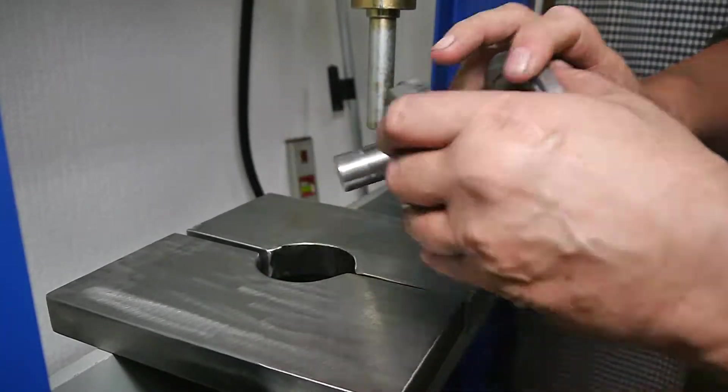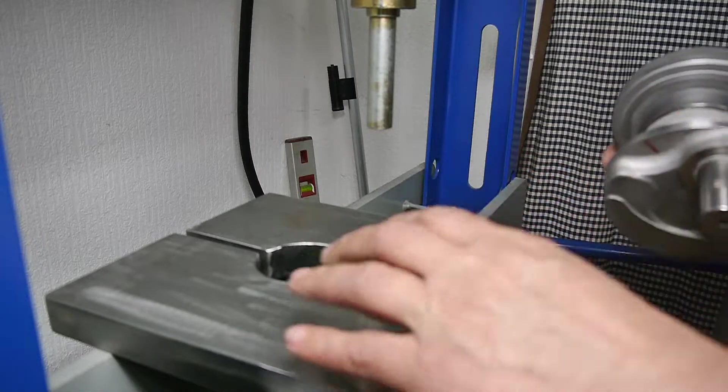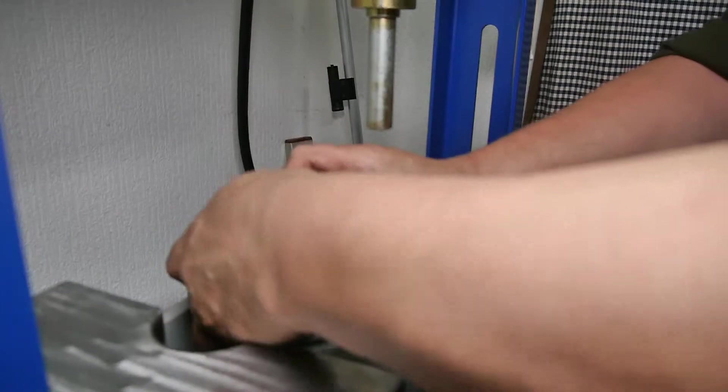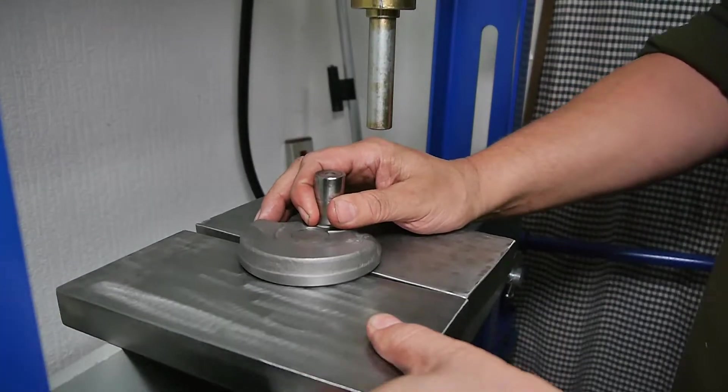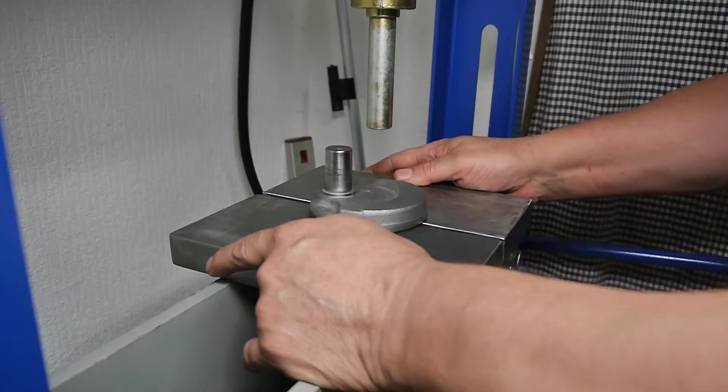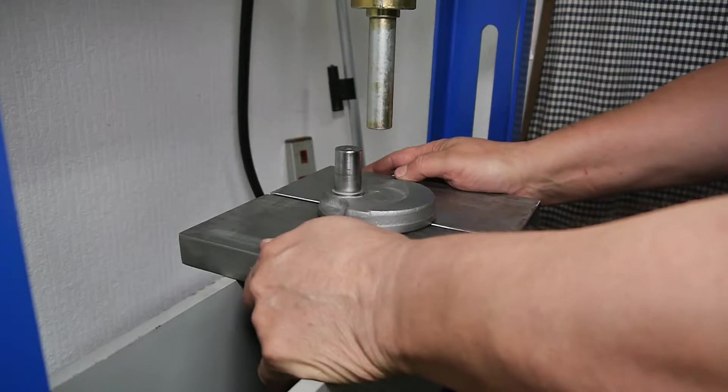Welcome back. Here is part two of the Yamaha RD-350LC crankshaft disassembly. In this video we're going to separate the center section and inspect the labyrinth seal and the inner main bearings.